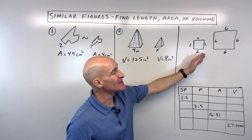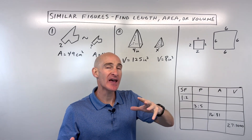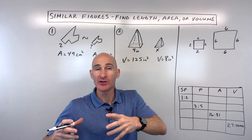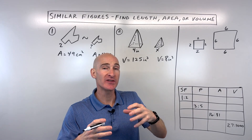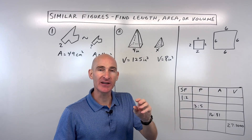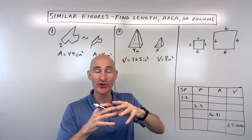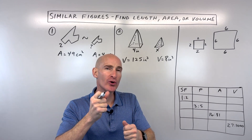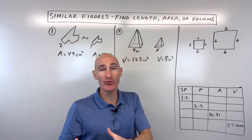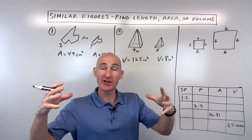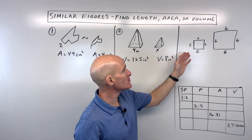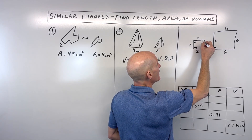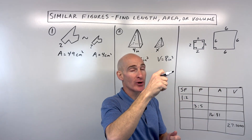Let's first talk about a simple example so you understand what similar figures are. Similar means they're basically the same shape but not necessarily the same size. Like when you enlarge or reduce something on your smartphone, you don't distort the shape — it's still the same shape, just proportionally larger or smaller, so the corresponding angles stay the same.